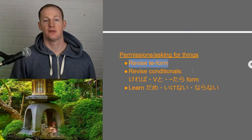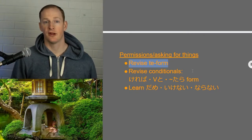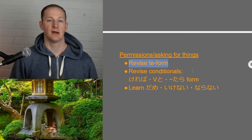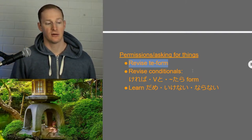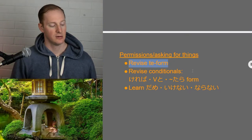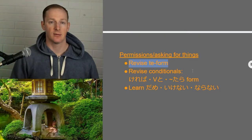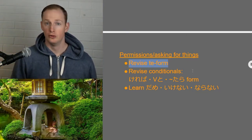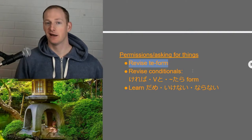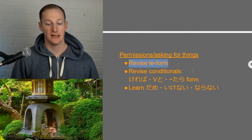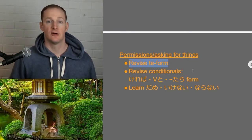Then we have the table with four options. All verbs ending in SU become SHITE. If they end with KU or GU, they become ITTE or IDE. If they end with BU, NU, or MU, they all become NDE. And if they end with RU, TSU, or U, they get a small TSU and TE. I went through that pretty quickly, but I've got a whole video on the TE form — you really want to be able to do it without thinking because it's going to be vital.